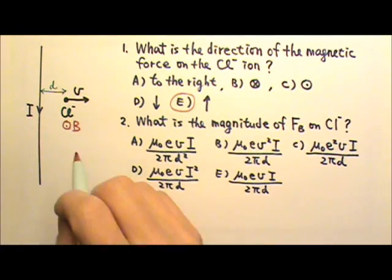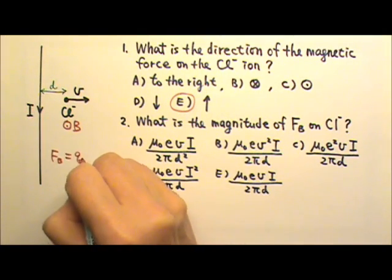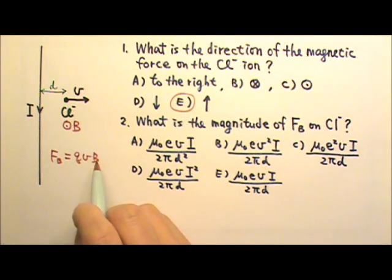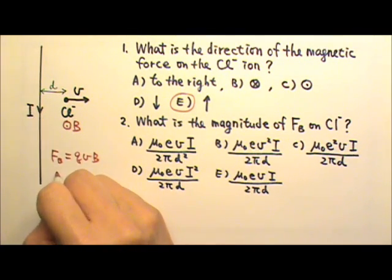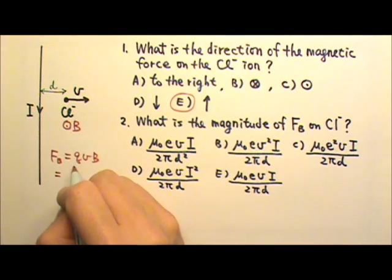As for the magnitude of the magnetic force on a moving charge, that will be QVB, and it's going to be sine 90 degrees, and sine 90 degrees is 1, so it's just QVB. The charge of chloride negative 1 is 1 elementary charge. The speed is V.